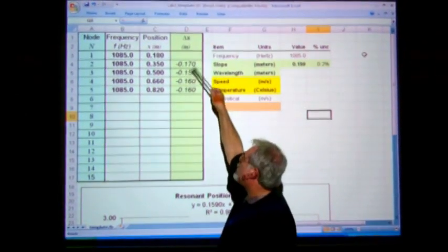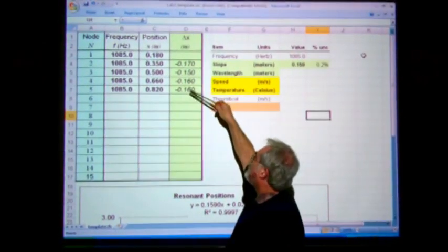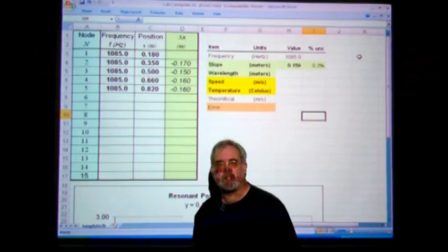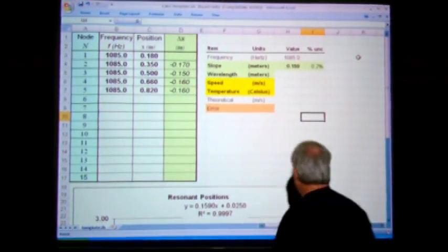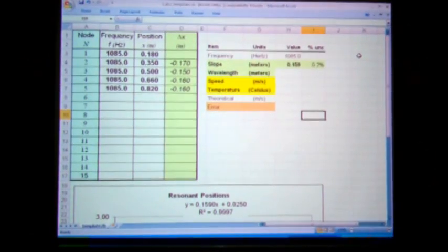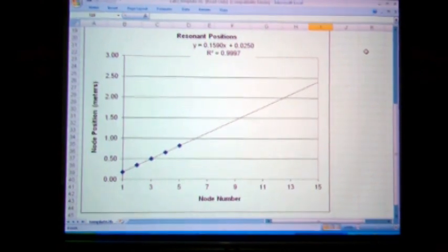It's doing some calculations here showing you how far apart they were. You can see they're almost all about the same. But the best way to get the wavelength is to put them on a graph and draw a line through it.